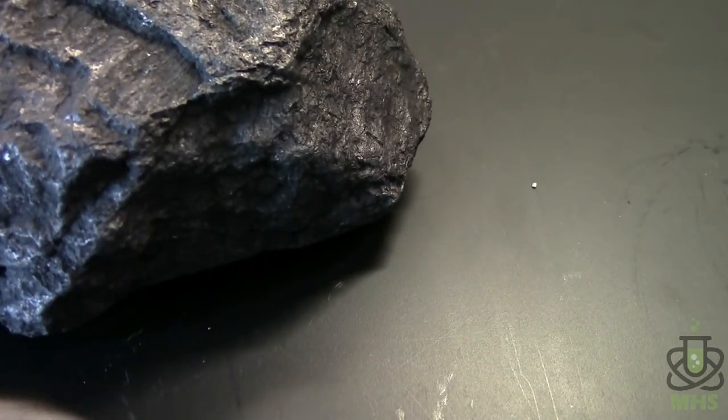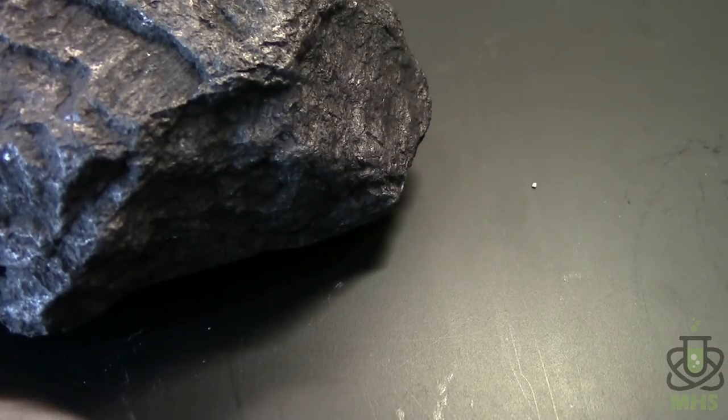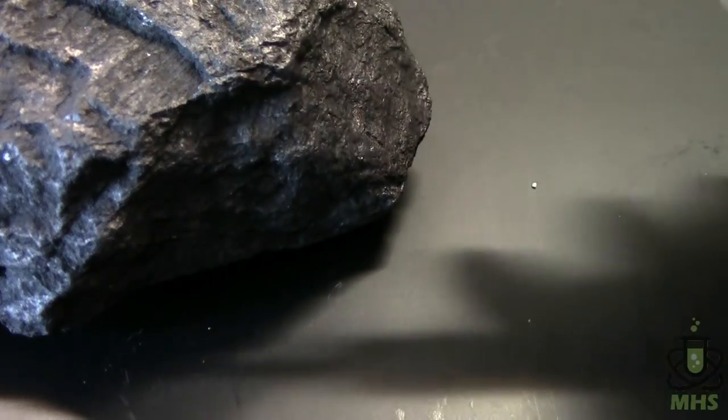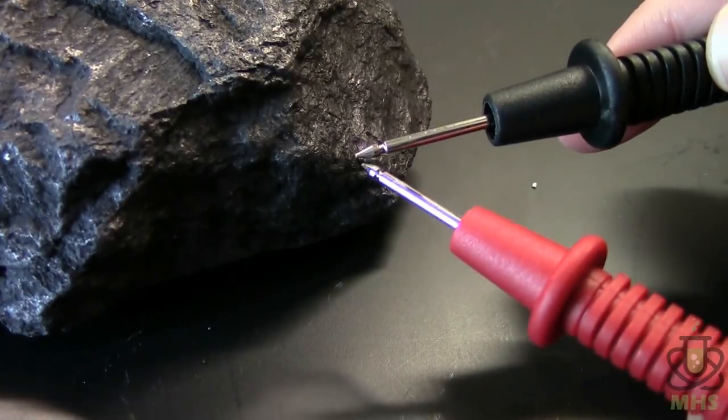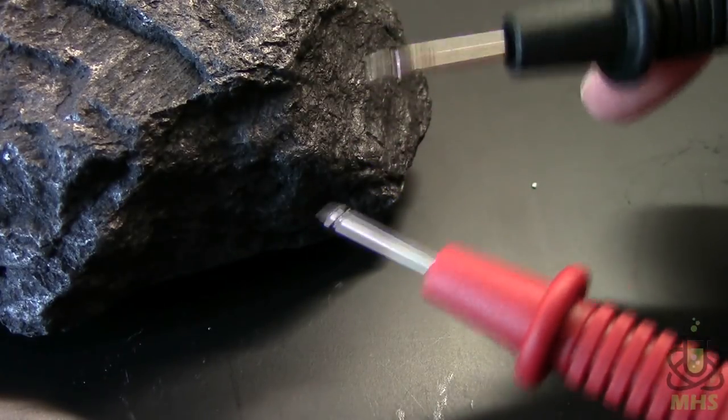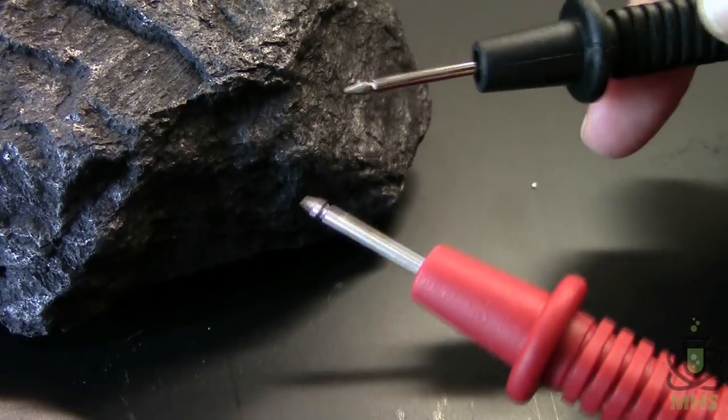So I mentioned that graphite is a good electrical conductor and diamond is a good electrical insulator. Let's see if we can test that. I've got a multimeter here that is set to the continuity sensor. If you put the two probes together, it beeps. That tells you there's a conductive path between the two probes.